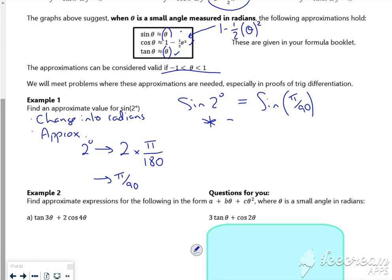And if I use my approximation, which is sine theta is approximately theta, that means then that sine 2 is approximately pi by 90. Which, if you stick it in your calculator, is roughly 0.0349. There you go. One little example done.